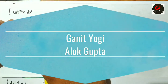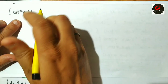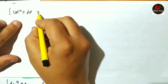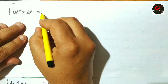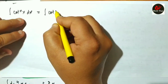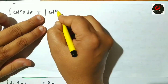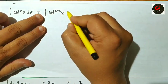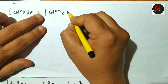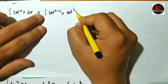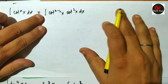The deduction formula for cot to the power n(x) — how will we get that? From calculus, we start with the integration of cot to the power (n-2)(x) multiplied by cot squared x dx.